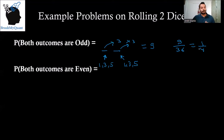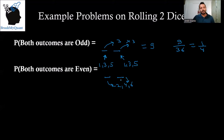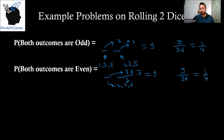What is the probability that both outcomes are even? Again, I have two places. In the first place I can get any even number — two, four, or six — and similarly in the second place I need to get an even number — two, four, or six. For each place I have three choices, so total choices are nine, and the probability is nine divided by 36, or one by four.